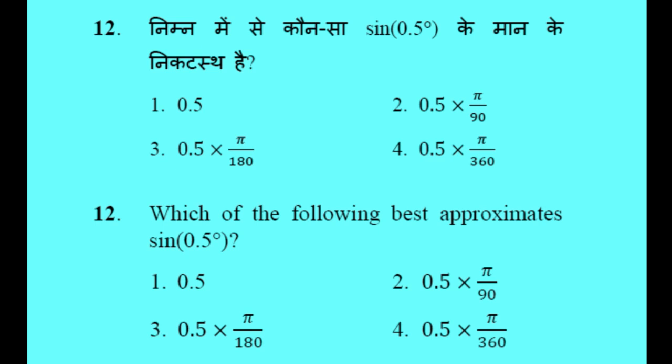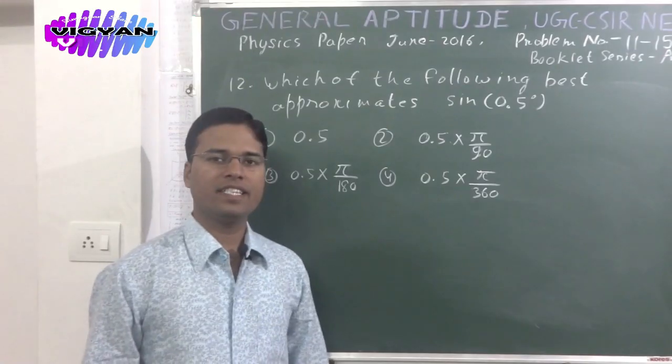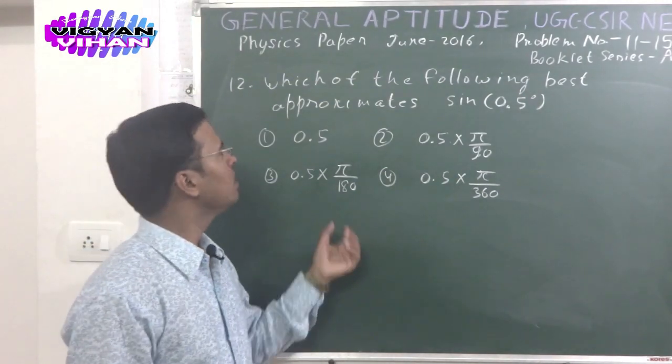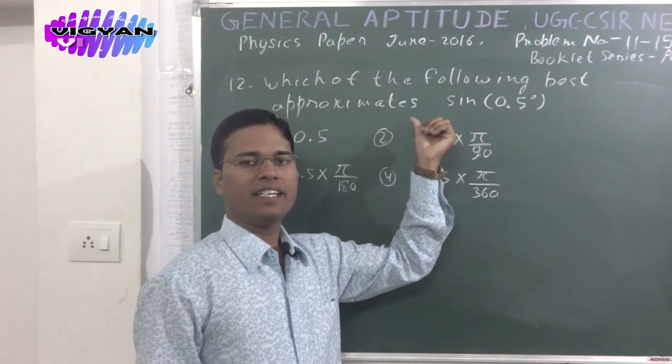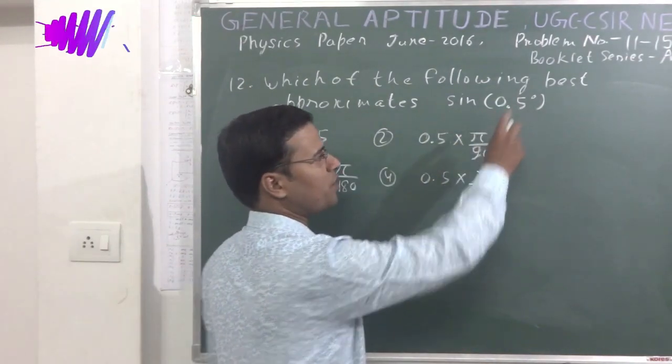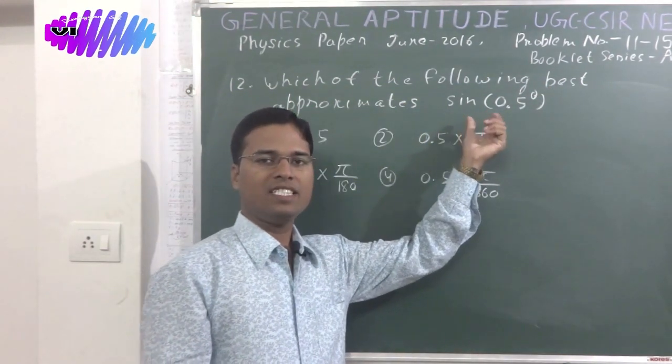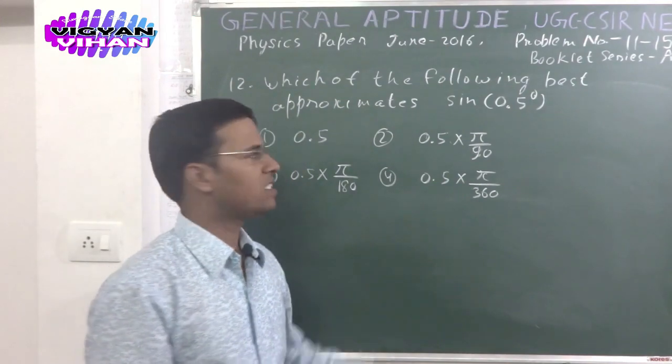Problem number 12: Which of the following best approximates sin(0.5 degrees)? Option 1: 0.5. Option 2: 0.5 × π/90. Option 3: 0.5 × π/180. Option 4: 0.5 × π/360. This is an easy problem — we will calculate the approximate value of sin(0.5 degrees) using the series expansion of sine.